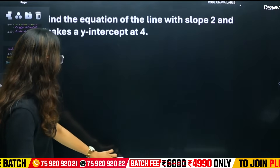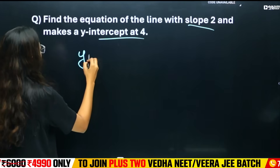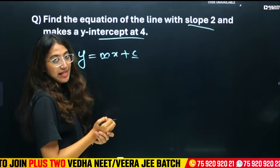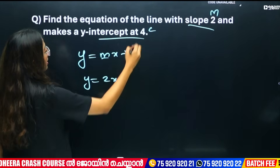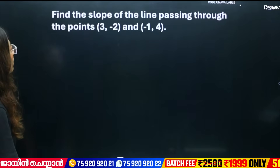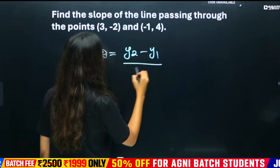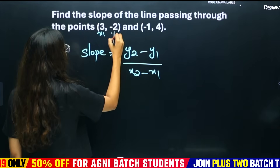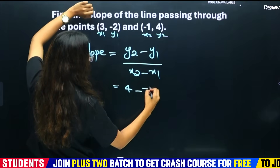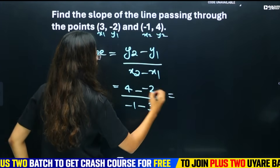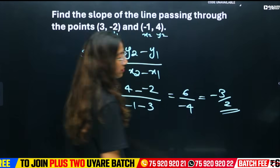That is the question on straight lines. Find the equation of the line with slope 2 that makes a y-intercept at 4. The y-intercept form equation is y = mx + c, where m is the slope and c is the y-intercept. So y = 2x + 4. The slope of a line is change in y divided by change in x: (y₂ - y₁)/(x₂ - x₁). With points (x₁,y₁) and (x₂,y₂), slope equals (4 - (-2)) / (-1 - 3) = 6 / (-4) = -3/2.